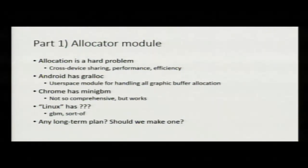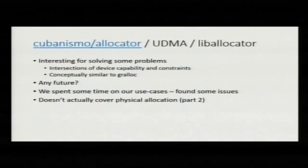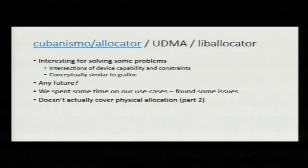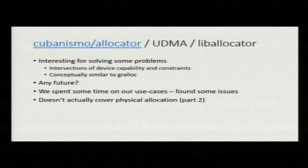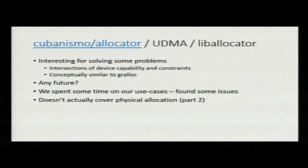Chrome has mini-GBM, which is not so comprehensive, but works. I'm not an expert on either Chrome or Linux, but there's sort of GBM on the Linux side. I'm not sure if there's a long-term plan for how to have a Gralloc-style thing on Linux or Chrome platforms, or something more generic. James Jones has the allocator project, which he talked about last year, which is interesting for solving some of the stuff. It's conceptually quite similar to Gralloc. Hopefully everyone's at least vaguely familiar with it.